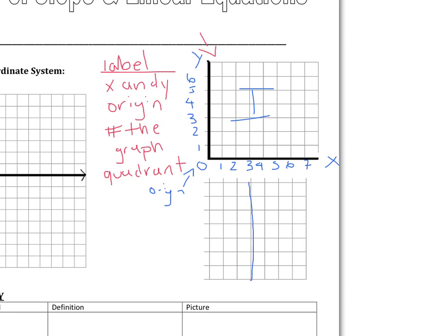Now try one more example with the second graph. I'm going to draw arrows at the ends of the axes to show they go on forever. Label this one with all the same things. You should have zero at the origin, with one, two, three going right and negative one, negative two, negative three going left, and one, two, three going up and negative one, negative two, negative three going down. Quadrants one, two, three, and four labeled counterclockwise, with x and y axis marked. That's it for today's video — please come to class ready to practice and with any questions.